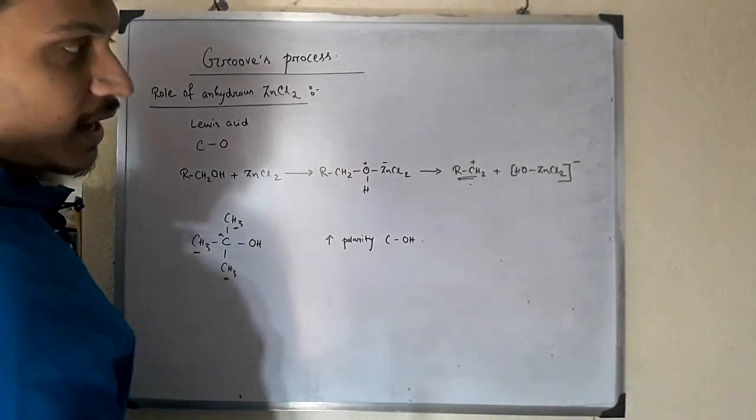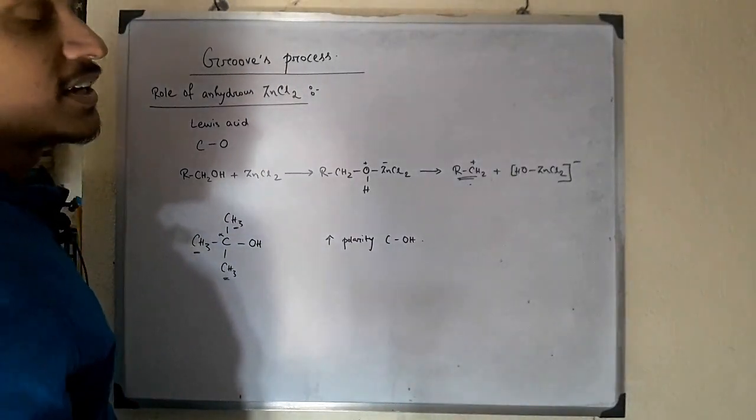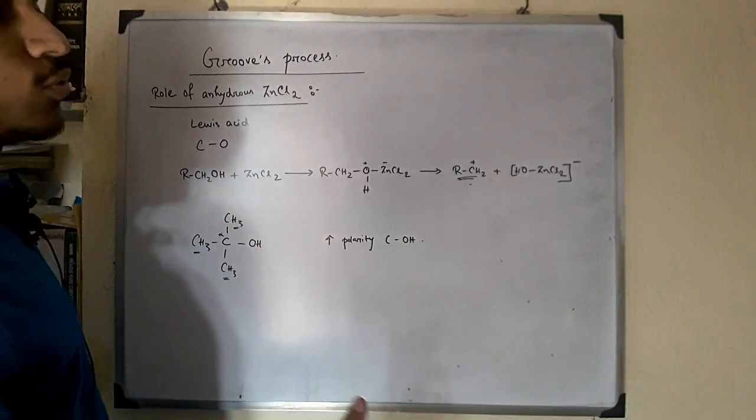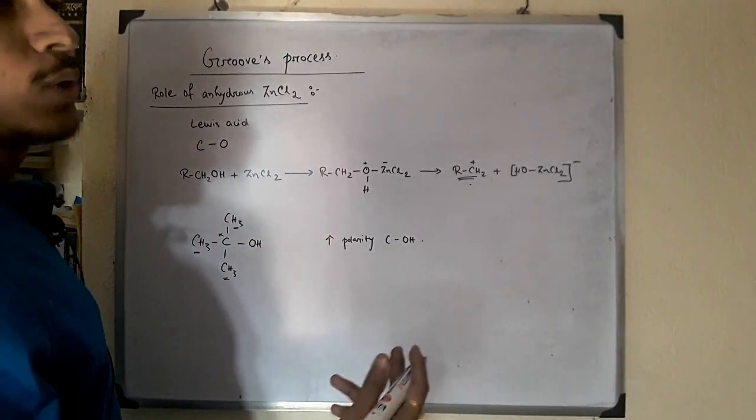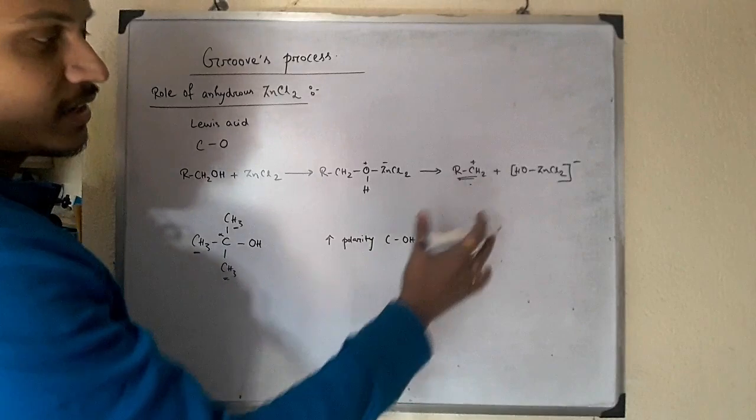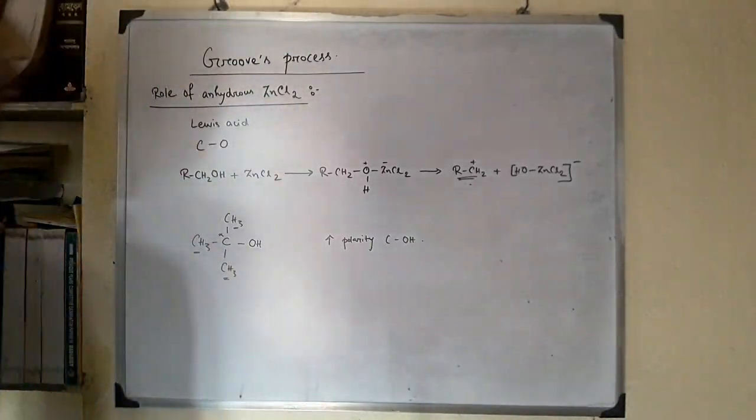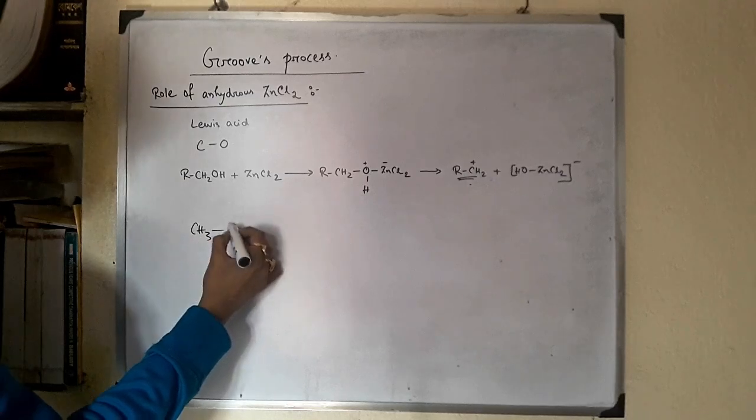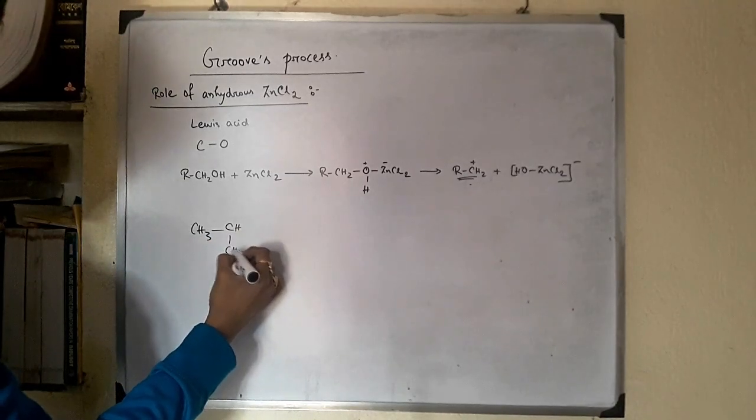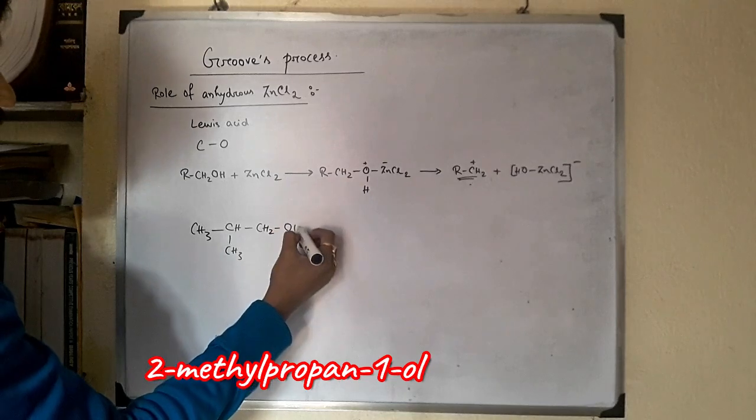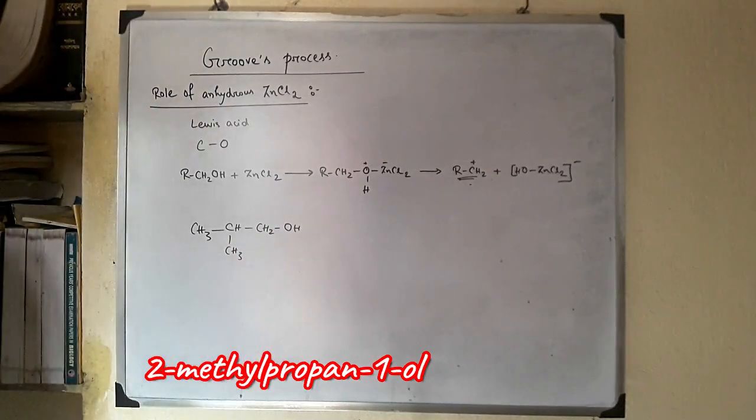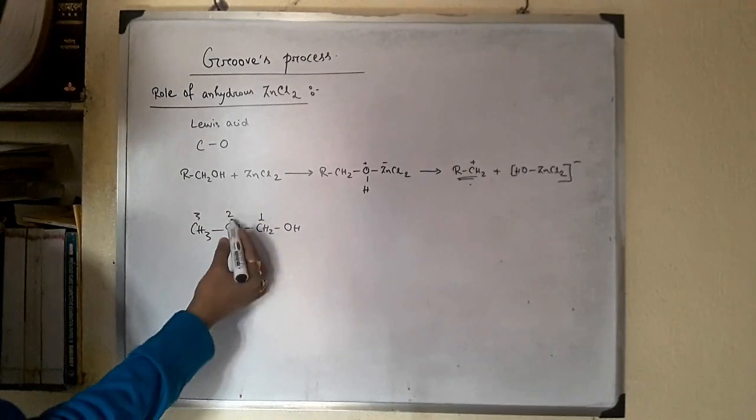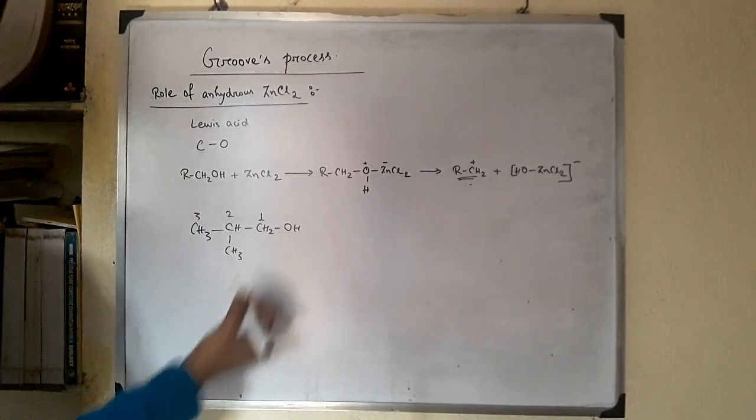If the carbocation can undergo rearrangement, then the product will be a mixture of two alkyl halides, in this case alkyl chlorides. Let's take the example of this alcohol, this is 2-methylpropan-1-ol.